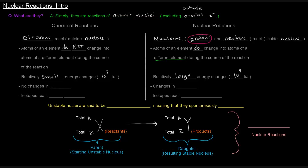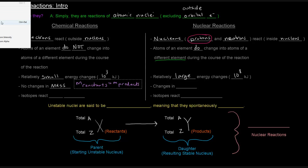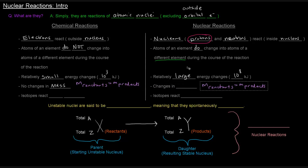In chemical reactions, there are no detectable mass changes — the mass of the reactants equals the mass of the products. In nuclear reactions, however, there are detectable changes in mass; the mass of the reactants does not equal the mass of the products. Some of the mass can actually be converted into energy. We won't talk too much about that now, but we may cover it more when we discuss nuclear chemistry in detail.